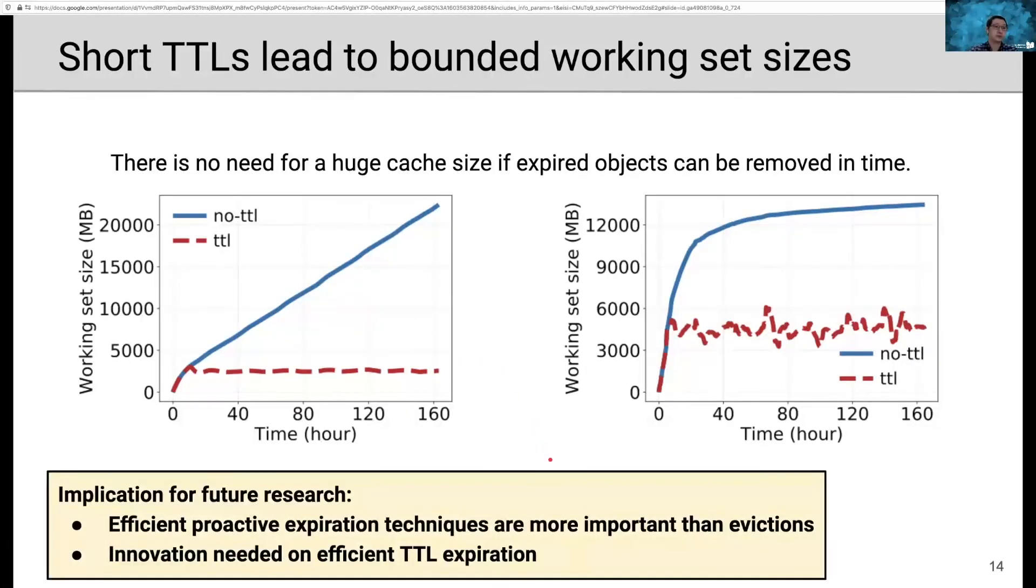So what does this mean? It means efficient, proactive TTL expiration techniques are more important than eviction. Because expiration removes objects that will no longer be used in the future, while eviction removes objects that could potentially be used in the future. Therefore, TTL expirations are more important than evictions in memory cache. In the paper, we studied different TTL expiration techniques. And we show that these techniques are either not sufficient or not effective. And we believe that innovations are needed on efficient TTL expiration.